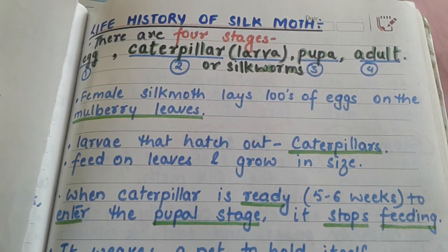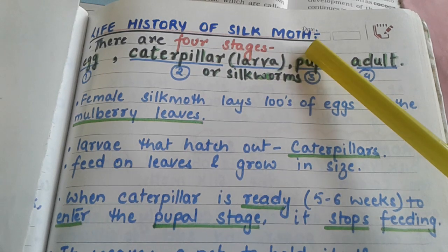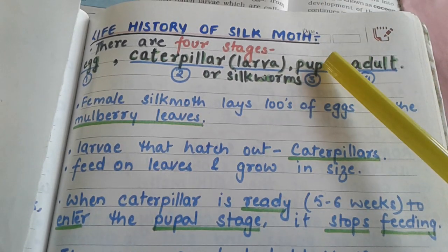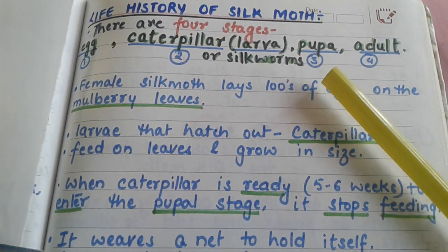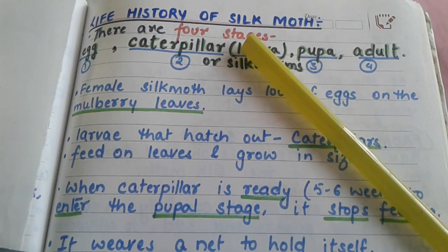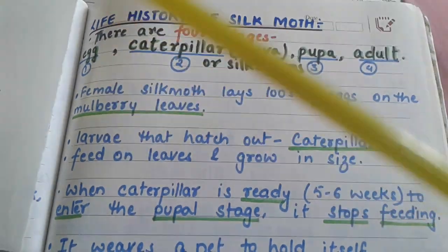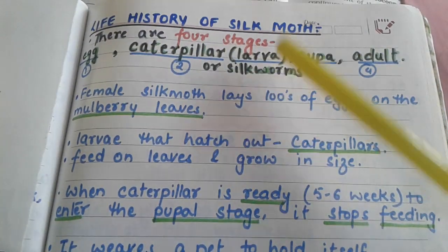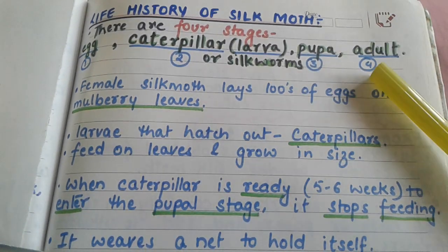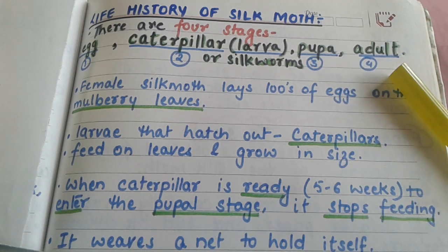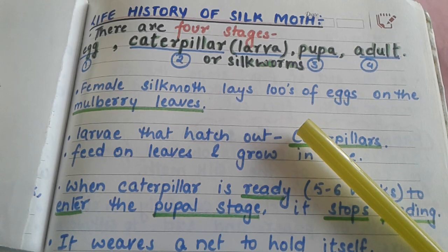Good morning students. Today in this video we are going to learn about the life history of silk moth and also how we obtain silk from the cocoons. There are four stages in the life history of silk moth: the first stage is the egg stage, second is the caterpillar or larva or silkworm stage, the third is the pupa or pupal stage, and the fourth one is the adult.